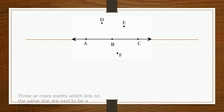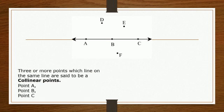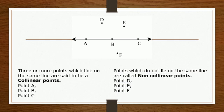Collinear points and non-collinear points. Points which lie on the same straight line are called collinear points. Point A, point B, and point C are on the same line. Hence, they are collinear points. Point D, point E, and point F are not on the same line. Hence, they are non-collinear points.